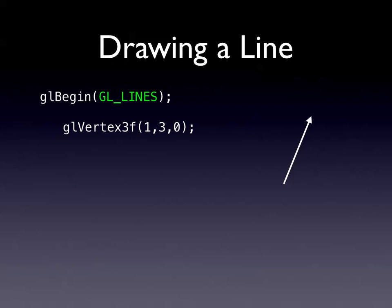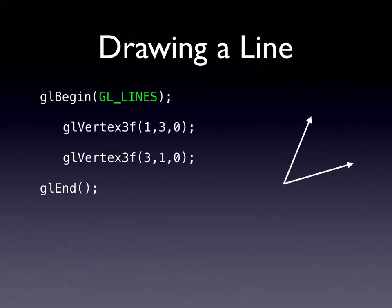The next slightly more complex primitive is GL_LINES. Same idea - you've got a vertex just like with a point, but this time you want two points to draw a line between them. So you've got (1, 3, 0) and (3, 1, 0). That puts two points on your screen, and then when you call GL_End, it draws a line between them.